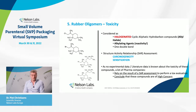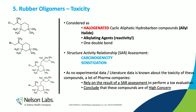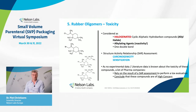The situation becomes different for the halogenated aliphatic hydrocarbons — the rubber oligomers that are halogenated. They are considered as alkylating agents, so there is a concern about their reactivity. They also come out in a structural activity relationship assessment as potentially carcinogenic and as a sensitizer. Again, because there is no experimental data, that is the only source you can rely on for your safety evaluation. As a conclusion, they come out as compounds of high concern.